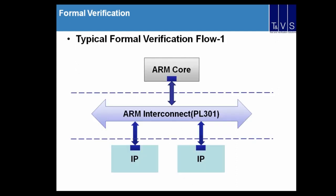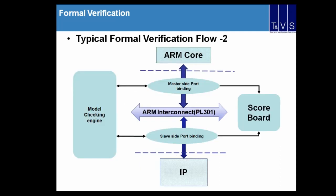This is a typical formal verification flow. We have an ARM core and ARM interconnect with several IPs in the SOC. Taking AXI protocol as an example, the master side connects to the ARM core and the slave side connects to the slave port. We can verify in two ways: protocol checking via model checking with assertions on the master side, and scoreboard checking for integrity and data connectivity path verification.